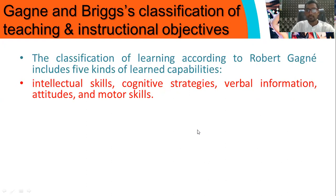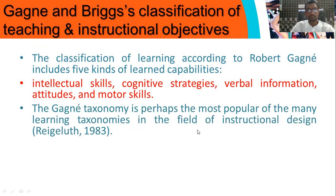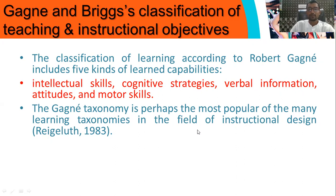The five capabilities are: intellectual skill, cognitive strategies, verbal information, attitude, and motor skills. The Gagnon taxonomy is perhaps the most popular of many taxonomies, like Bloom's taxonomy, from 1983.